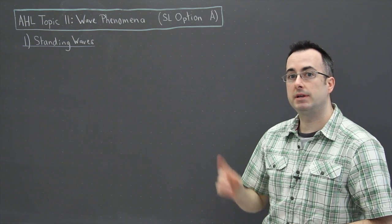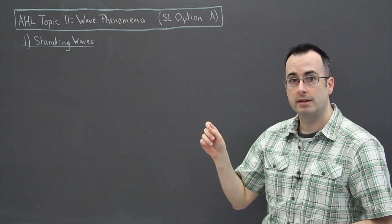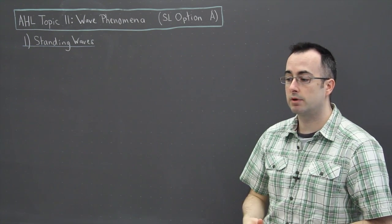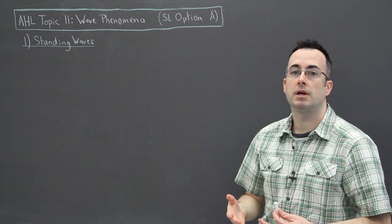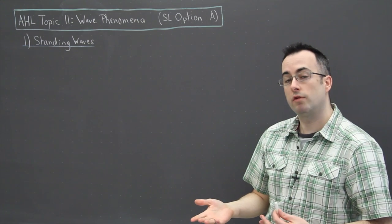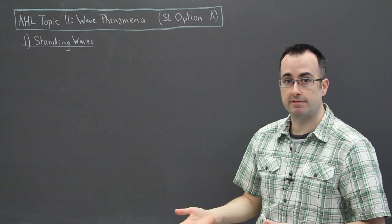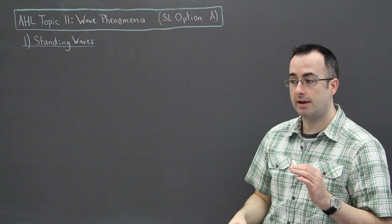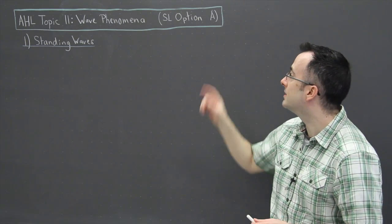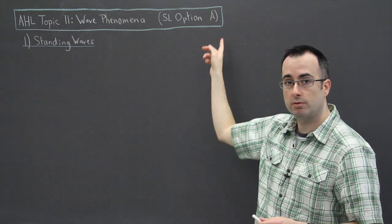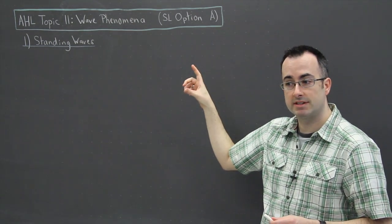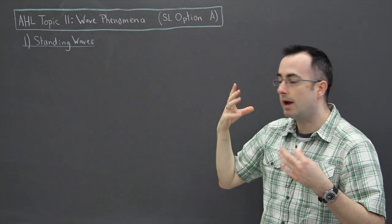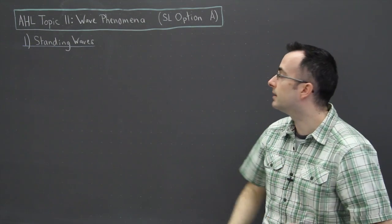Now this option is called option A if you're an SL student, and it's actually called sight and wave phenomena. There's a little part at the beginning about sight that's worth looking up in a textbook, but it doesn't really give any big difficulties. I'm going to go over some of the things that do cause students difficulties. So if you're a physics SL student doing sight and wave phenomena, in other words option A, there's a little extra section you need to do at the beginning about sight. It's about your eye and how we perceive colors.